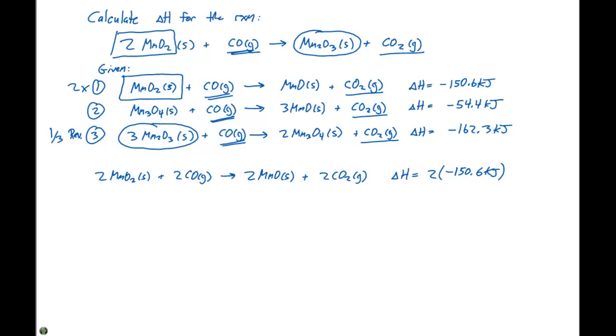If we then take a third and reverse the first reaction, that will give us one Mn2O3, that will give us two-thirds Mn3O4 as a solid plus a third CO2 as a gas. This gives us a delta H equal to a third times positive 162.3 kilojoules.